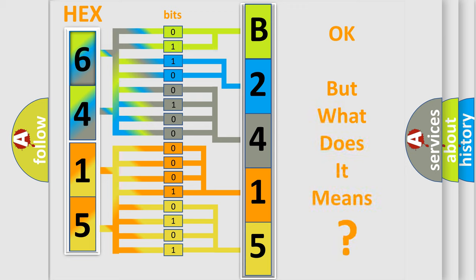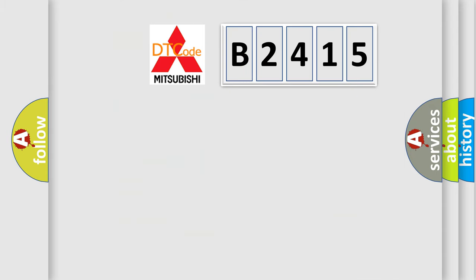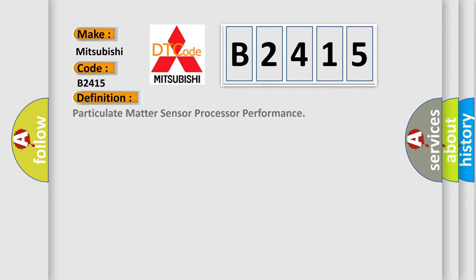The number itself does not make sense to us if we cannot assign information about what it actually expresses. So, what does the diagnostic trouble code B2415 interpret specifically for Mitsubishi car manufacturers? The basic definition is: Particulate Matter Sensor Processor Performance.